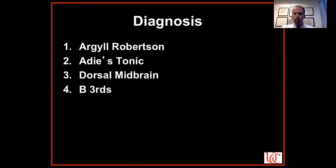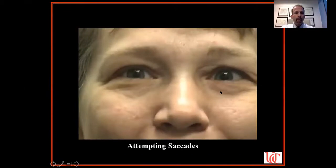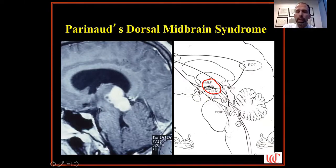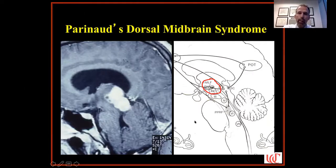The correct answer is dorsal midbrain — also called Parinaud's dorsal midbrain syndrome. On the sagittal MRI, here is the midbrain, here is the pons, and here is a tumor — a germinoma — sitting right on the dorsal midbrain. The rostral interstitial nucleus of the MLF and the interstitial nucleus of Cajal live in the dorsal midbrain, forming the vertical gaze center. You can see not only upgaze palsy but a complete vertical gaze palsy. The patient did very well with treatment and is still doing well — that video is at least 15 years old.